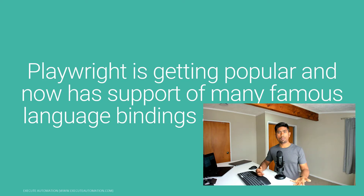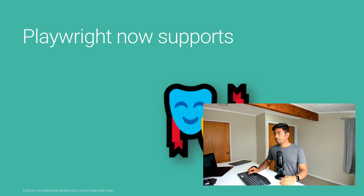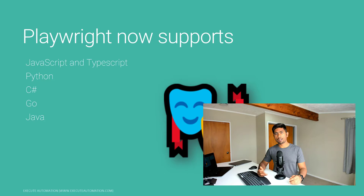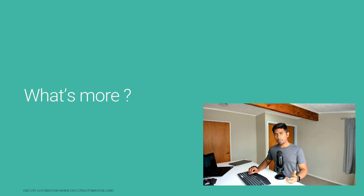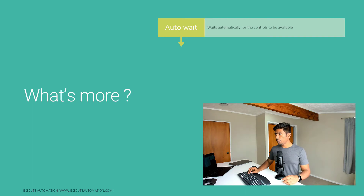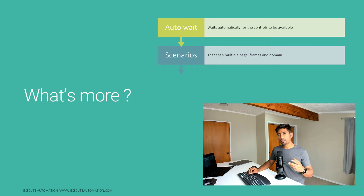Playwright supports multiple languages: JavaScript, TypeScript, Python, C#, Go, and Java. You can use whichever language you prefer. Another major advantage is that Playwright automatically waits for elements in the UI, so you don't need to add explicit waits. You can also test across multiple pages, frames, and domains.